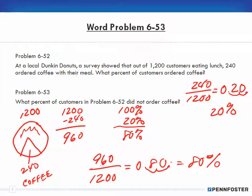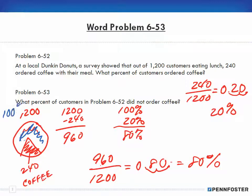It all depends on what's being asked in the problem. It's also good for a double check, because if one portion is 20% and the other is 80%, they should add up to 100%, which represents the full 1200 customers.